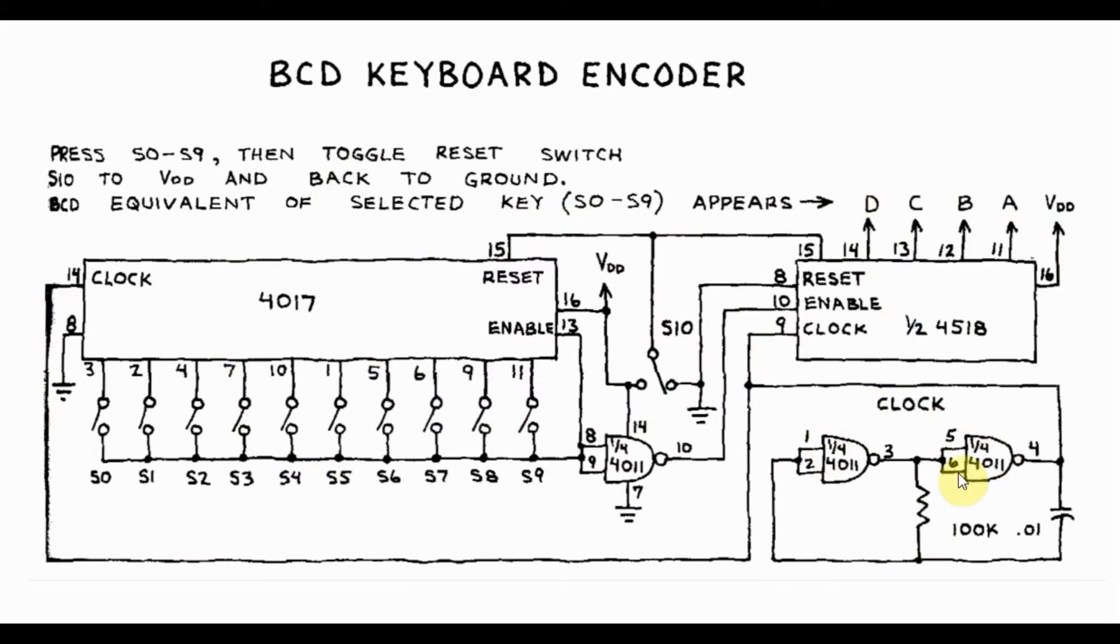The clock circuit is an astable multivibrator that generates a clock signal at approximately 50 Hz, which is used to drive the two counters 4518 and the 4017.